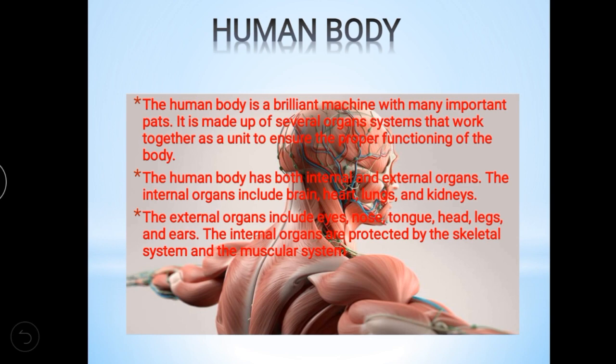The human body has both internal and external organs. Internal means inside the body; external means outside the body. Internal organs include brain, heart, lungs, and kidneys — we also have liver, spleen, and intestine. These are internal organs.